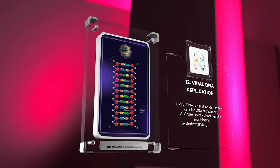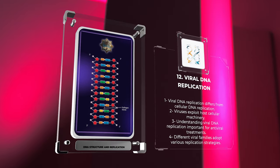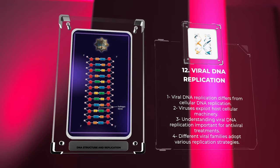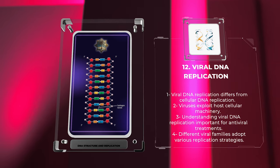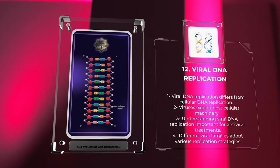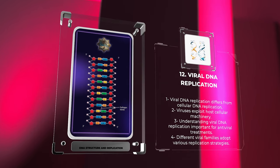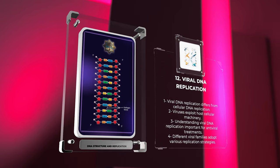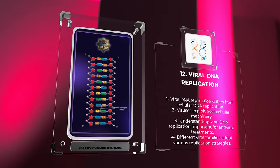Viral DNA replication differs from cellular DNA replication in many aspects. Viruses exploit the host's cellular machinery to replicate their DNA, often employing unique enzymes and mechanisms. Understanding viral DNA replication is vital for developing antiviral treatments and combating viral infections effectively. Different viral families adopt various strategies to replicate their genetic material, which we will explore in more depth.